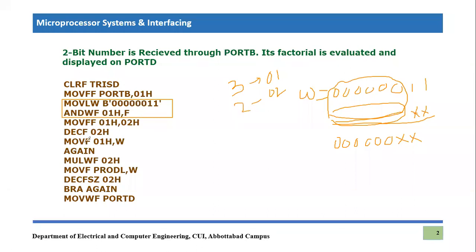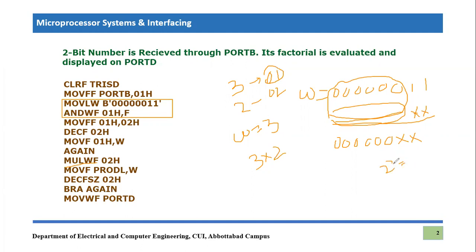Then we do Move F 01h to W, so W will become equal to three. Then we start our multiplication logic: MUL working with file 02h. Whatever value is stored in the working register — which is three in this case — is being multiplied with 02h, whose content is two. So three multiplied by two gives six. Since we are applying the MUL working with file instruction, the result will go into Product L or Product H. We are copying the content of Product L. One question arises: we are not using Product H because we are using only a two-bit number. A two-bit number can be at maximum two-to-the-power-two, which equals four.